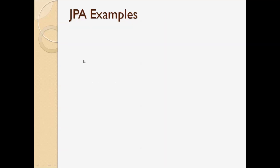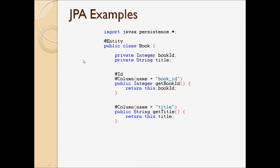Here are a couple of examples showing how the code looks when using JPA. This model class is annotated using JPA annotations. The class Book is mapped to the table book in the database using the @Entity annotation, and the field is mapped to a column in the database using the @Column annotation. This column is a primary key. Similarly, the field title is mapped to the title column in the database using the @Column annotation.